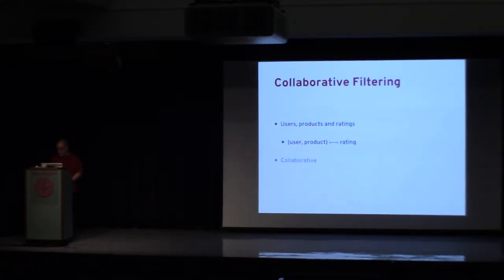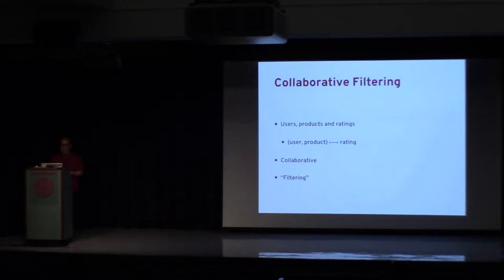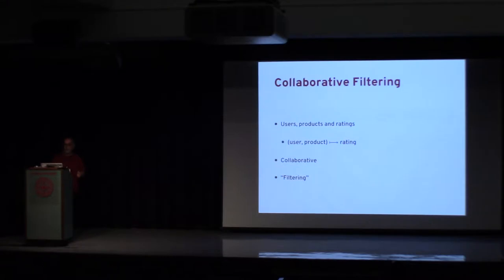So what is collaborative filtering? First, let's talk about recommender systems. Recommender systems are a popular method of matching historical data from users, products, and the ratings you have — the connection between those users and products. Usually you have a unique relation between a user, a product, and a rating.